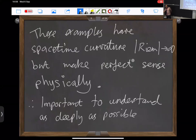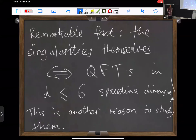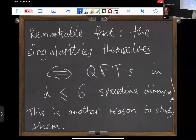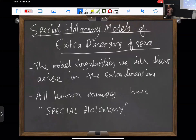These singularities themselves correspond to interesting quantum field theories in various dimensions, which gives another motivation for wanting to study them. That's been the overarching picture of understanding space-time singularities in string theory: they correspond to interacting degrees of freedom, only in cases when they make sense. All of the known examples are singularities that arise in the extra dimensions of space, and all of these examples have what's called special holonomy.